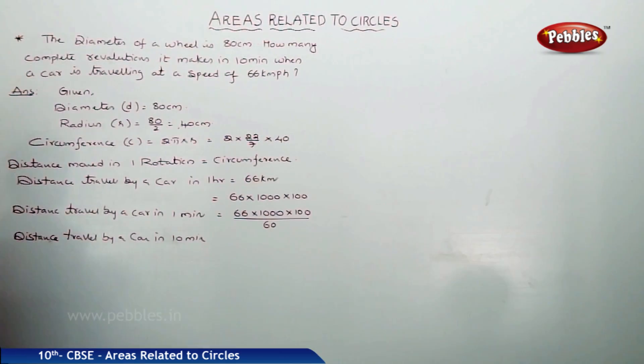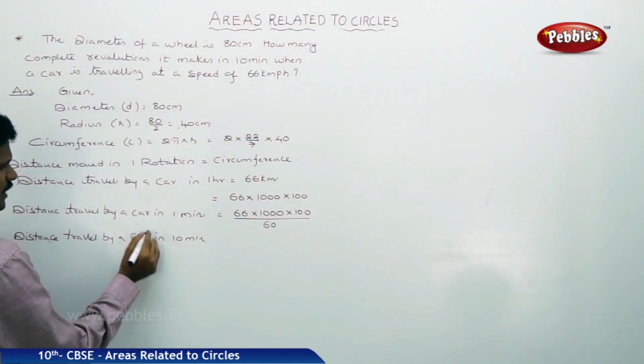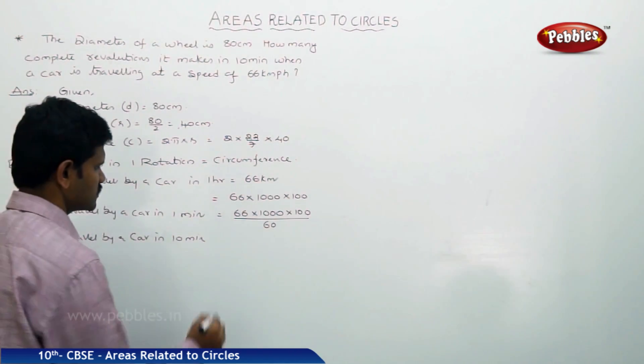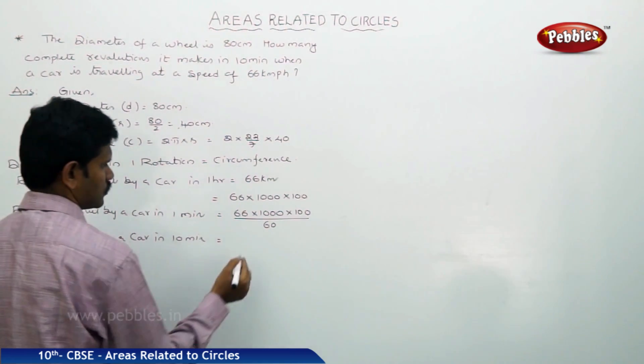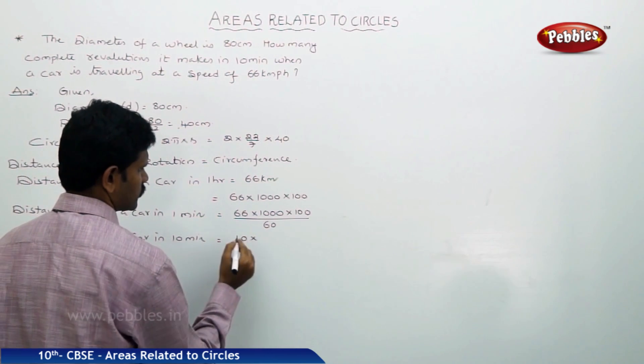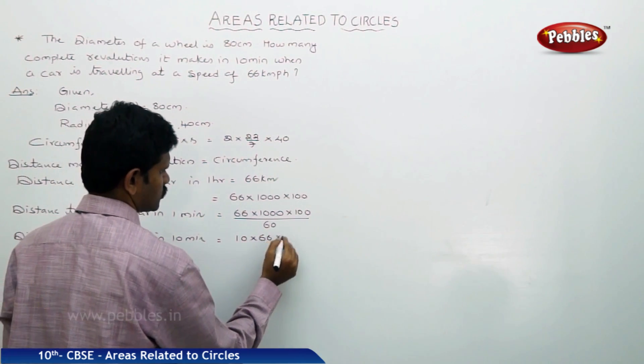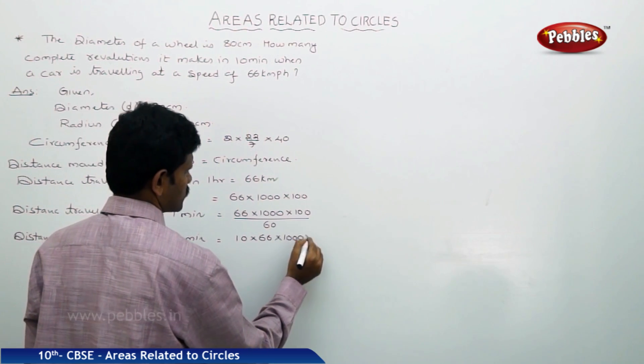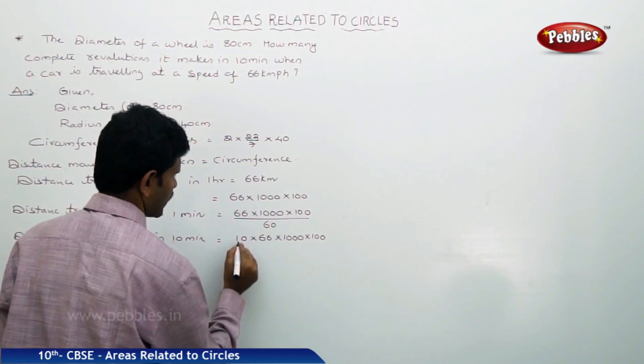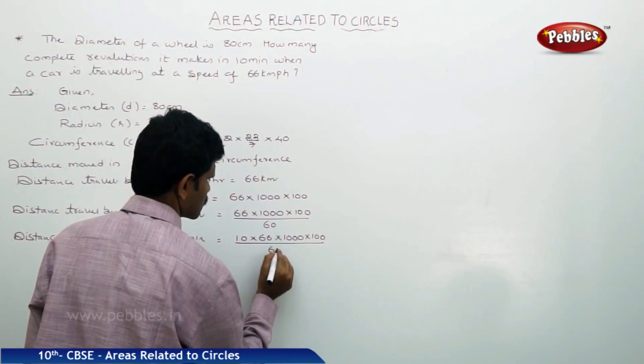Distance traveled by a car in 10 minutes is equal to 10 times 66 times 1000 times 100 by 60.